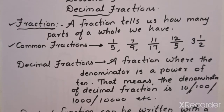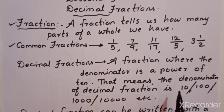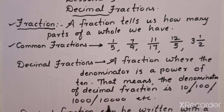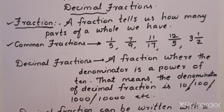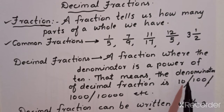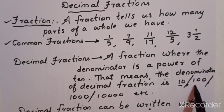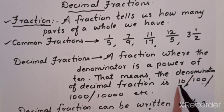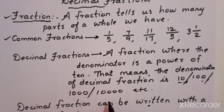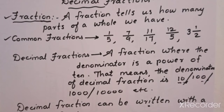What is a decimal fraction? A fraction where the denominator is a power of ten. Power of ten means ten, hundred — ten tens are hundred. Ten into ten into ten is one thousand, the third power of ten. The denominators of decimal fractions can be ten, hundred, thousand, ten thousand, lakh, ten lakh, and so on.